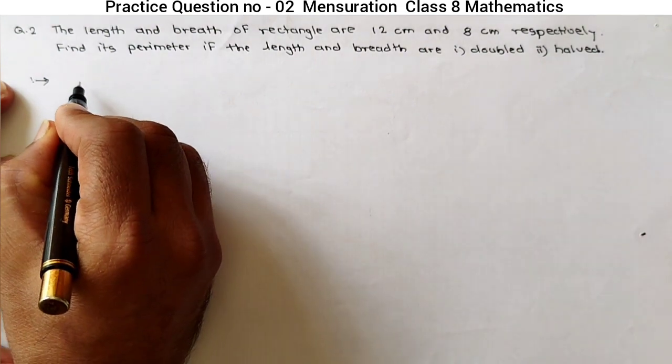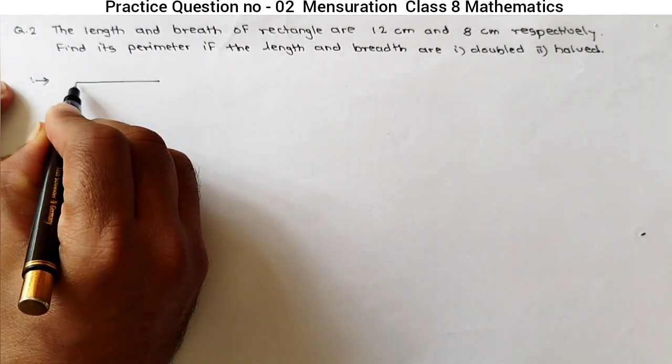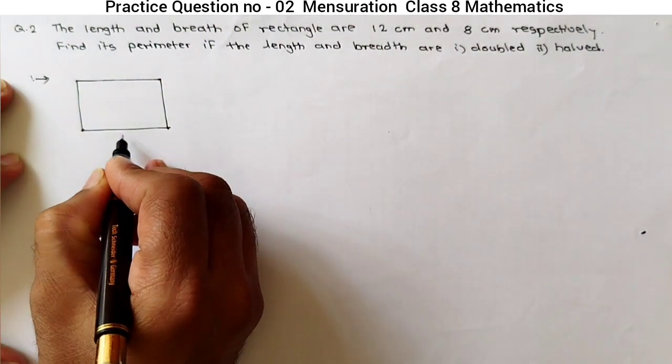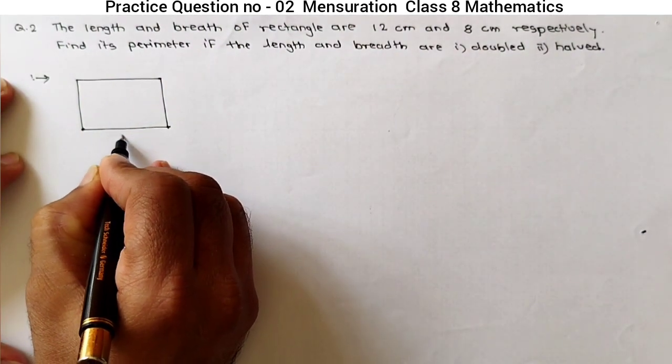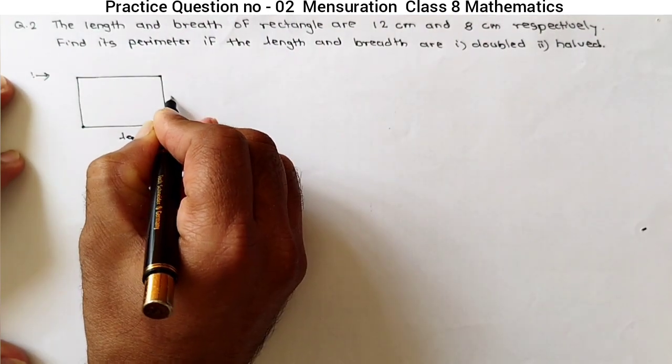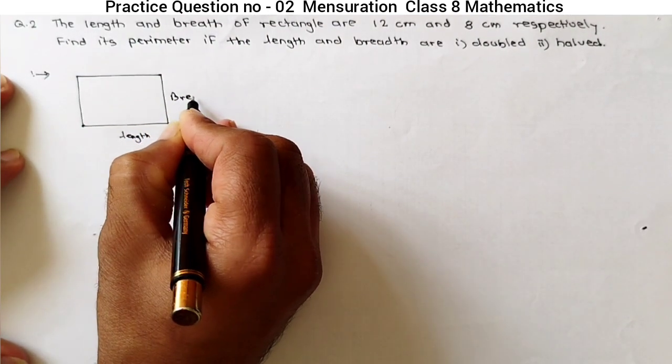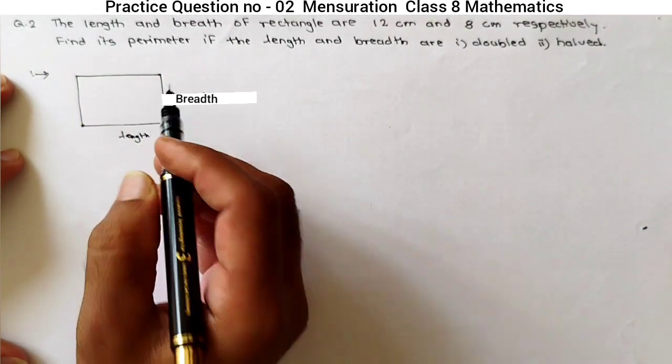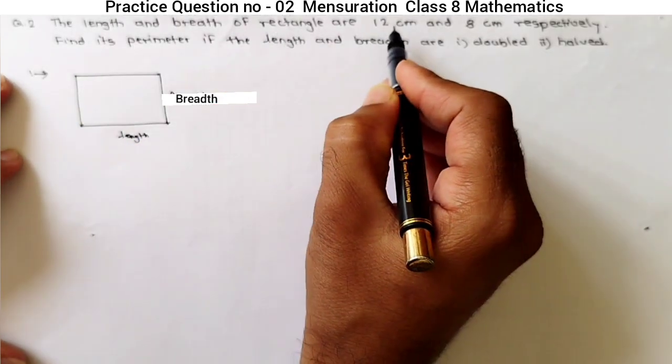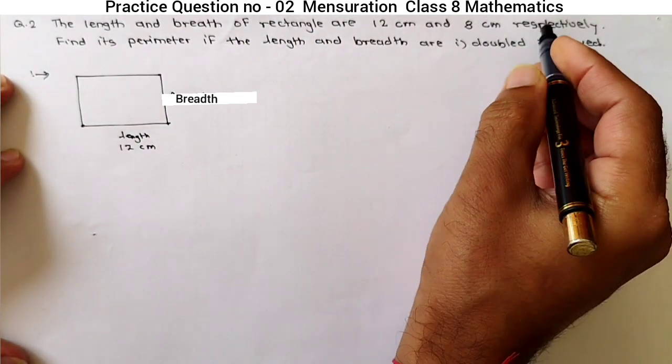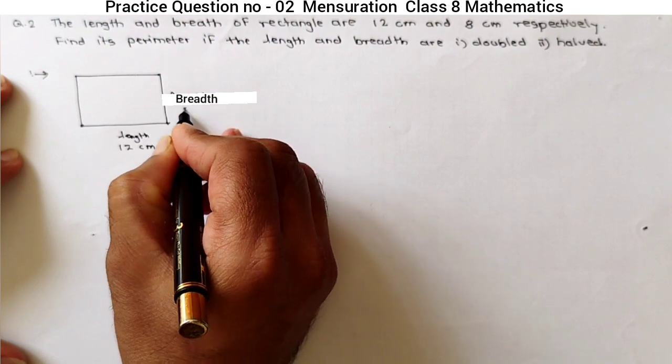So, if we consider a rectangle, rectangle is like this. This is the length and this will be the breadth. What is given? Length is 12 cm and breadth is given 8 cm.